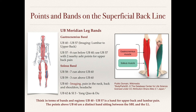To sum up: think in terms of these regions and bands. We have the gastrocnemius band from UB40 down to UB57, where UB40 treats lumbar pain and UB57 is good for upper back pain. The second band is the soleus band, where the urinary bladder shifts laterally, covering the area from UB58 down to UB59. Both the gastrocnemius and soleus muscles are part of this superficial backline.